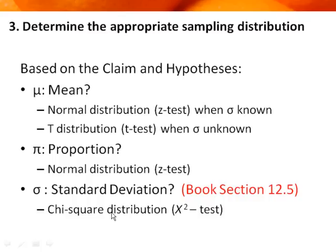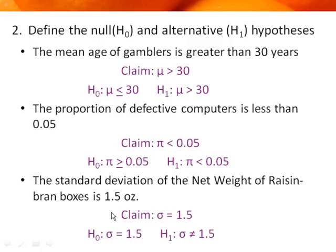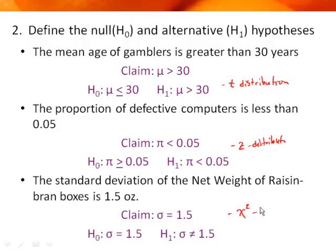Applying these rules to our examples: 'mean age of gamblers' — population standard deviation is not given, so it's a t-distribution. 'Proportion of defective computers' — it's about a proportion, so it's a Z-distribution. 'Standard deviation of Raisin Bran boxes' — it's about standard deviation, so it's a chi-square distribution. Identifying the distribution is easy once you've defined the hypotheses.